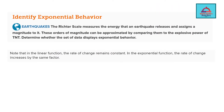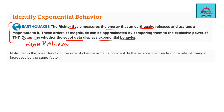Let's look at what kind of questions can appear in your exam. This is a word problem where you need to identify exponential behavior. Either in a word problem or with a given data set, you need to check whether the data displays exponential behavior, yes or no, and reason out your answer. The Richter scale measures the energy that an earthquake releases and assigns a magnitude to it. These orders of magnitude can be approximated by comparing them to the explosive power of TNT. You need to look at the table of values and check whether it shows exponential behavior.